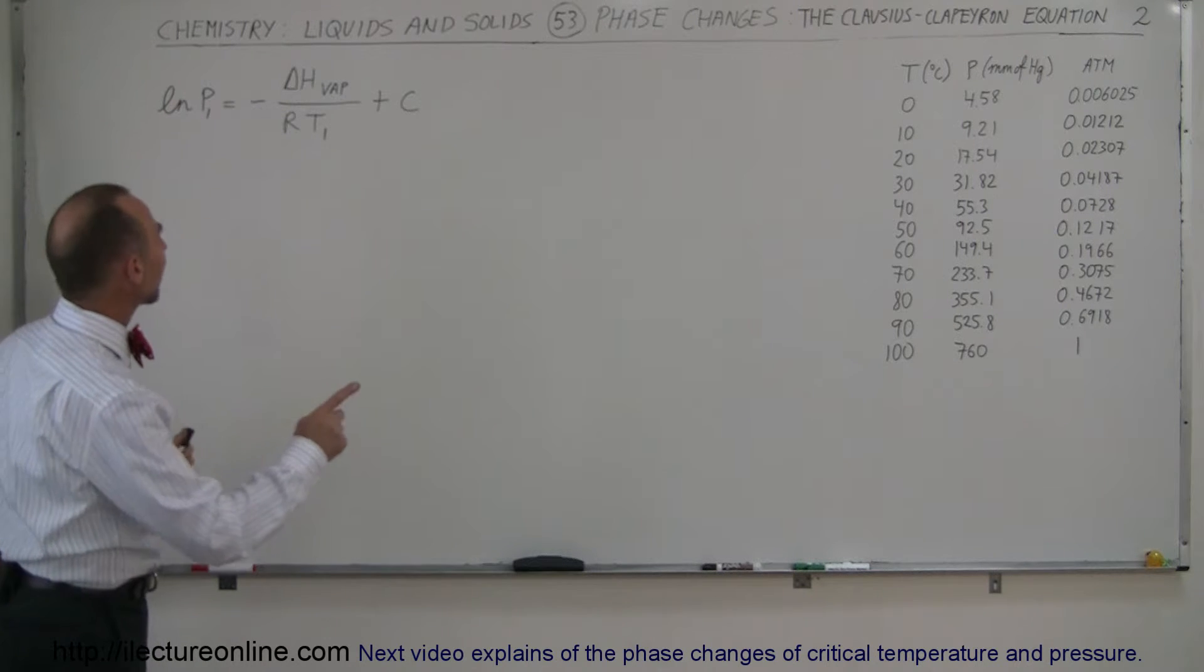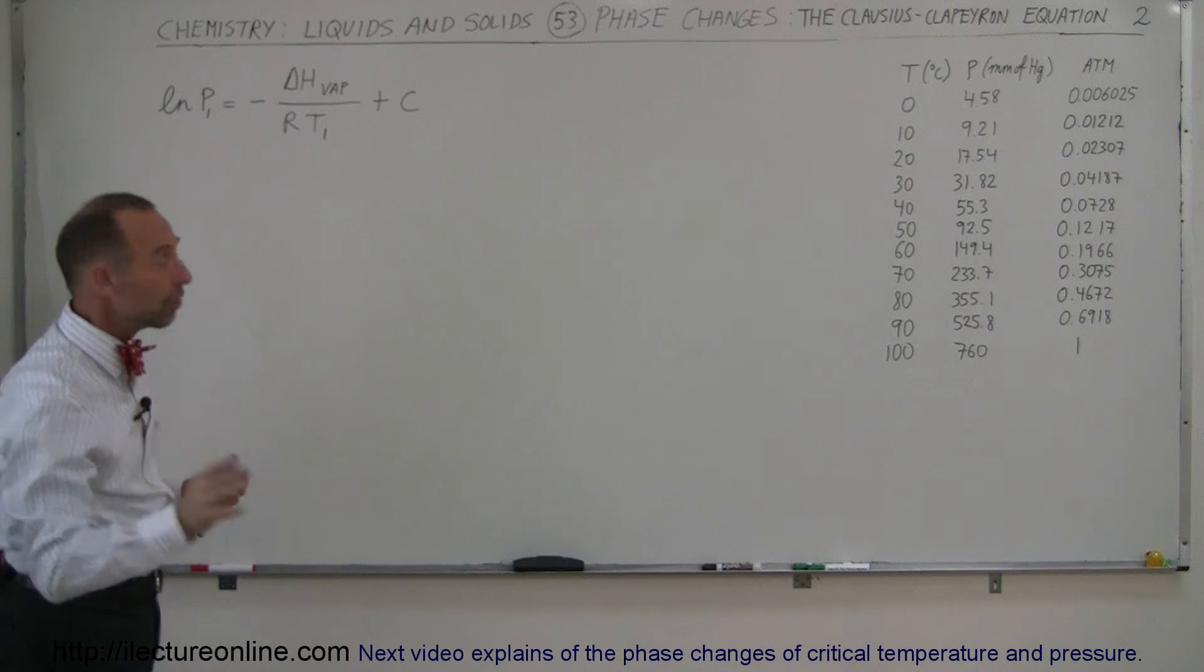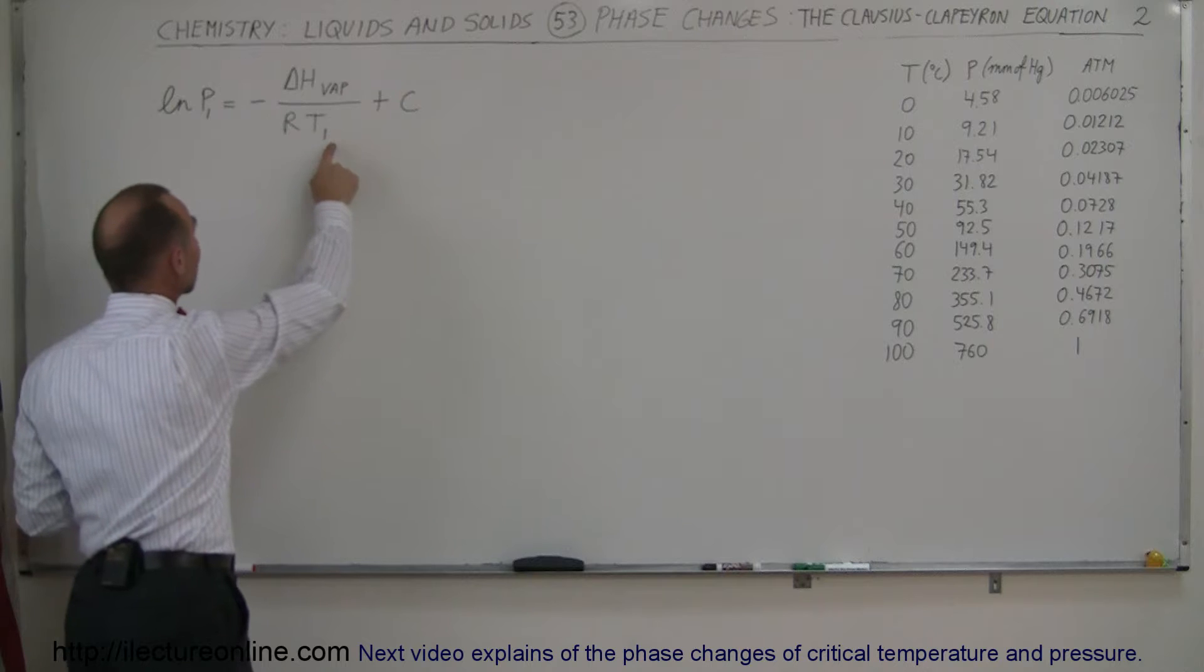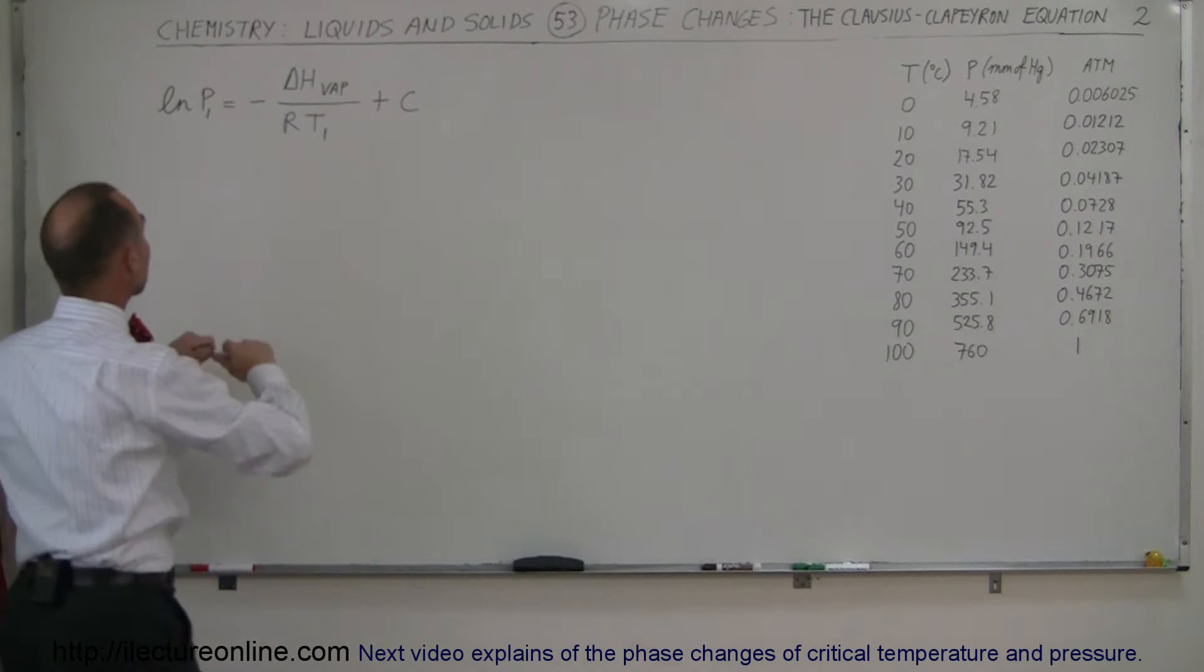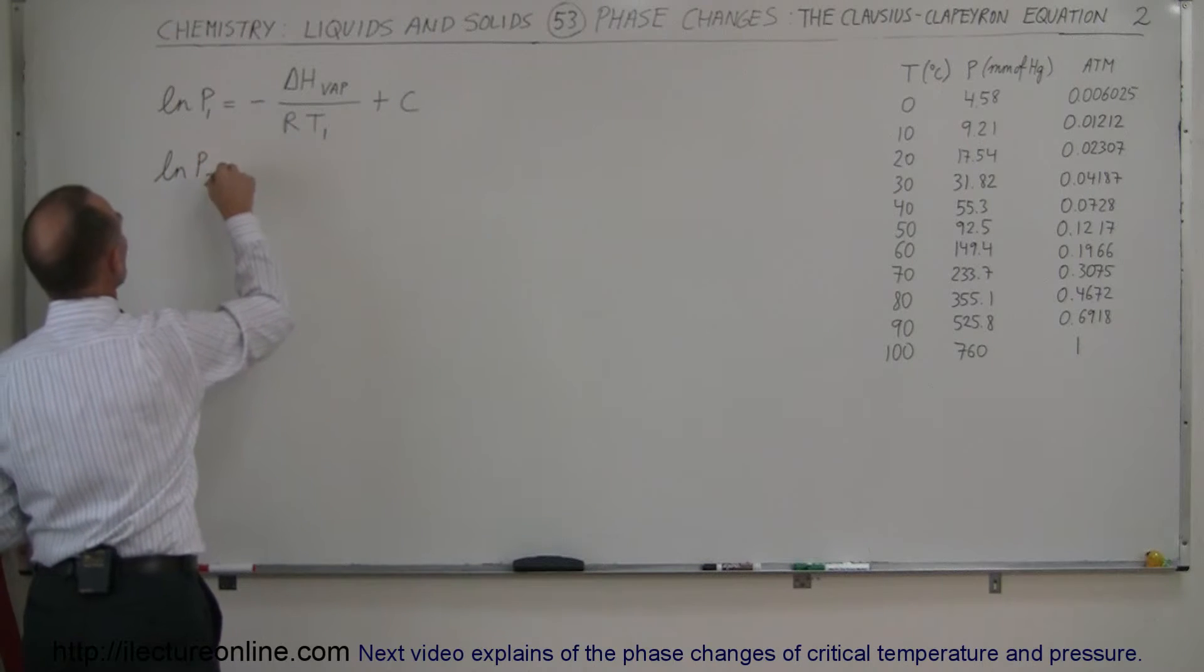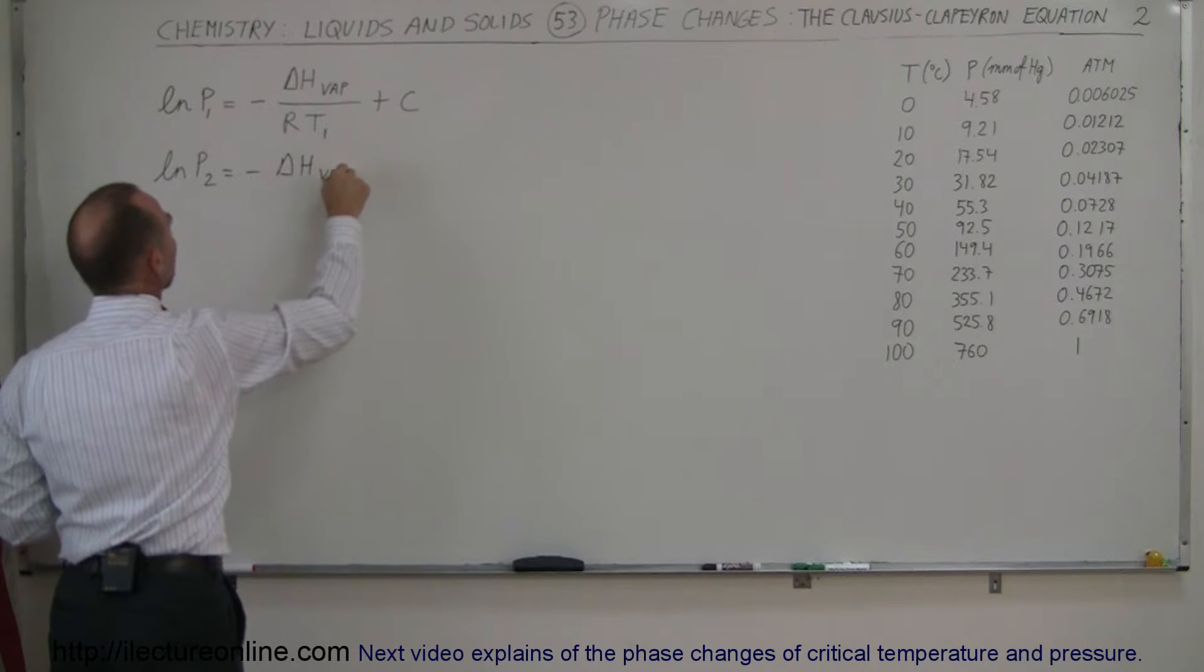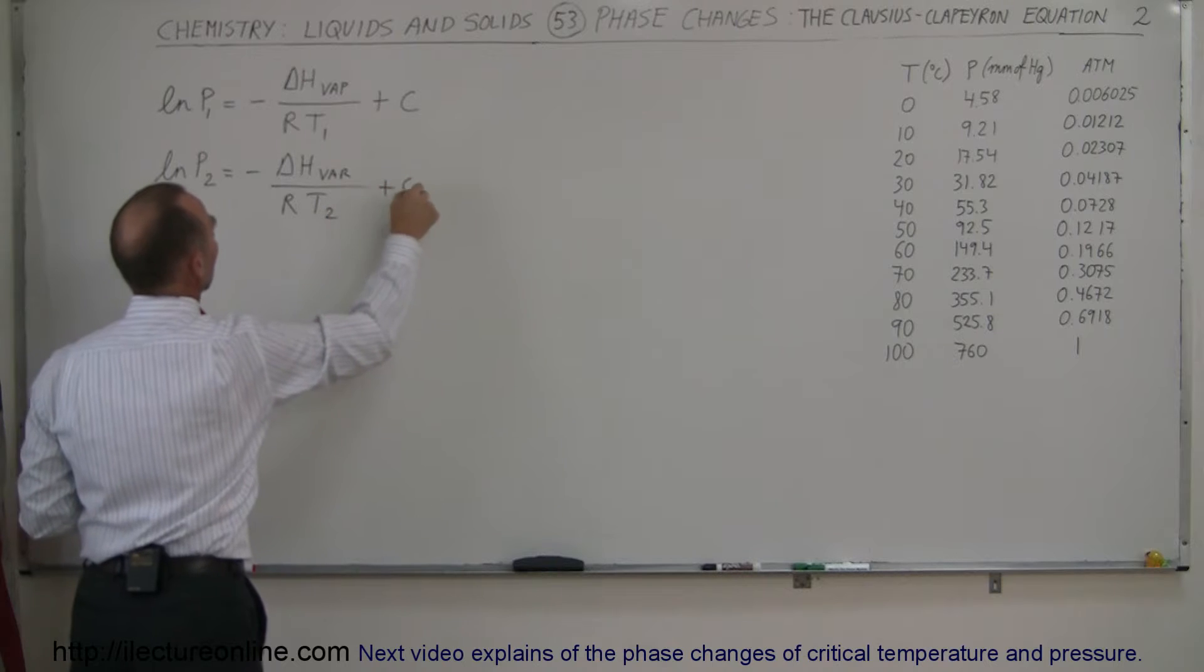Here's the equation again, but this time I put in P sub 1 and T sub 1. So the vapor pressure at some temperature can be calculated using this equation. But we can do that also for a second temperature, so the natural log of P2 equals minus the enthalpy of vaporization for water divided by R times T2, plus a constant.